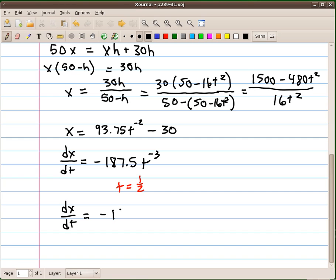So, that's negative 187.5 times 8, because 1.5 to the negative 3 is the same as 2 cubed, which is 8. And that answer happens to be negative 1500 feet per second.